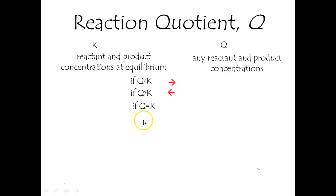And if Q is equal to K, you're right at equilibrium, and nothing will happen. The reaction is quote unquote done. That means the rate of the forward reaction is equal to the rate of the reverse reaction, and you're good to go.